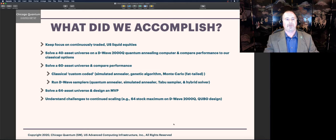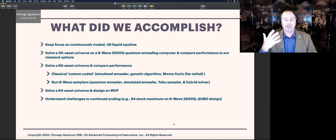So what did we accomplish? We've kept our focus on U.S. liquid equities. We solved 40 asset universe and compared the performance against the best classical options we could. We then solved a 60 asset stock universe and compared the performance against a much improved set of classical options. The feedback we received from the first paper, thank you if you're listening, we developed a simulated annealer. Both coded ourselves so we could tune it, as well as using D-waves. We basically upgraded our genetic algorithm and came up with a brand-new Monte Carlo analysis.